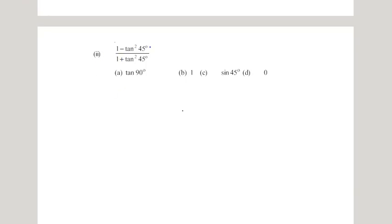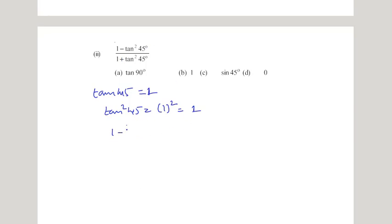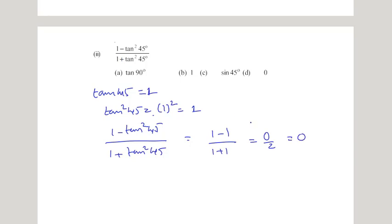The second question is: (1 - tan²45°) / (1 + tan²45°). We know tan45° = 1, so tan²45° = 1. Substituting: (1 - 1) / (1 + 1) = 0/2 = 0. So the correct option is Option D.